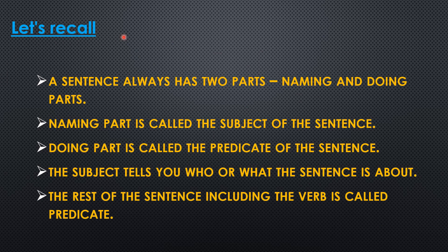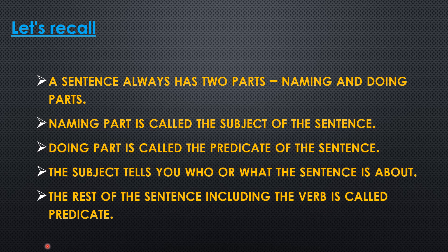Let's recall once again children. A sentence always has two parts — naming and doing parts. Naming part is called the subject of the sentence. Doing part is called the predicate of the sentence. The subject tells you who or what the sentence is about. The rest of the sentence including the verb is called predicate. So children, do practice the concept. Thank you.